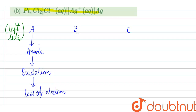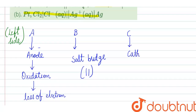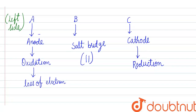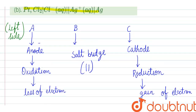B is the salt bridge, indicated by the double line symbol. C is the cathode. Cathode means reduction. Reduction means gain of electrons, and this is on the right side.